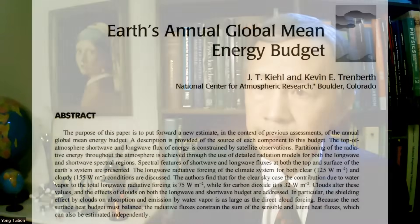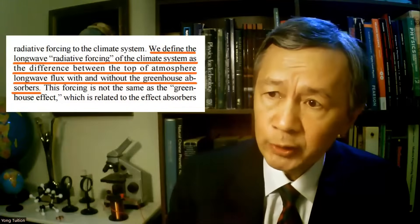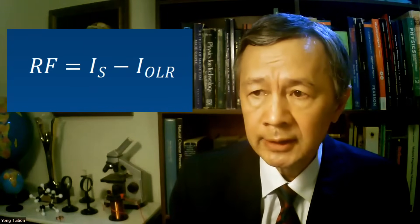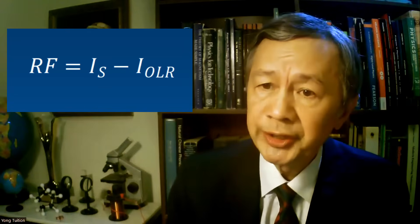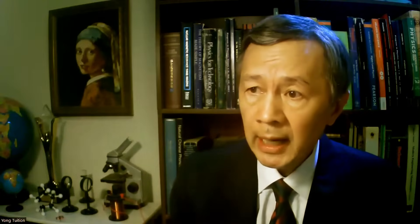You might have thought climate modeling is based on physics — that was what I had thought before I personally looked into this issue in depth. According to a 1997 paper by Kells and Trenberth, radiative forcing is the difference between the terrestrial radiation intensity, presumably detected near the surface, and the outgoing radiation intensity detected at the top of the atmosphere. Both are longwave and upward, with units of W per meter squared.